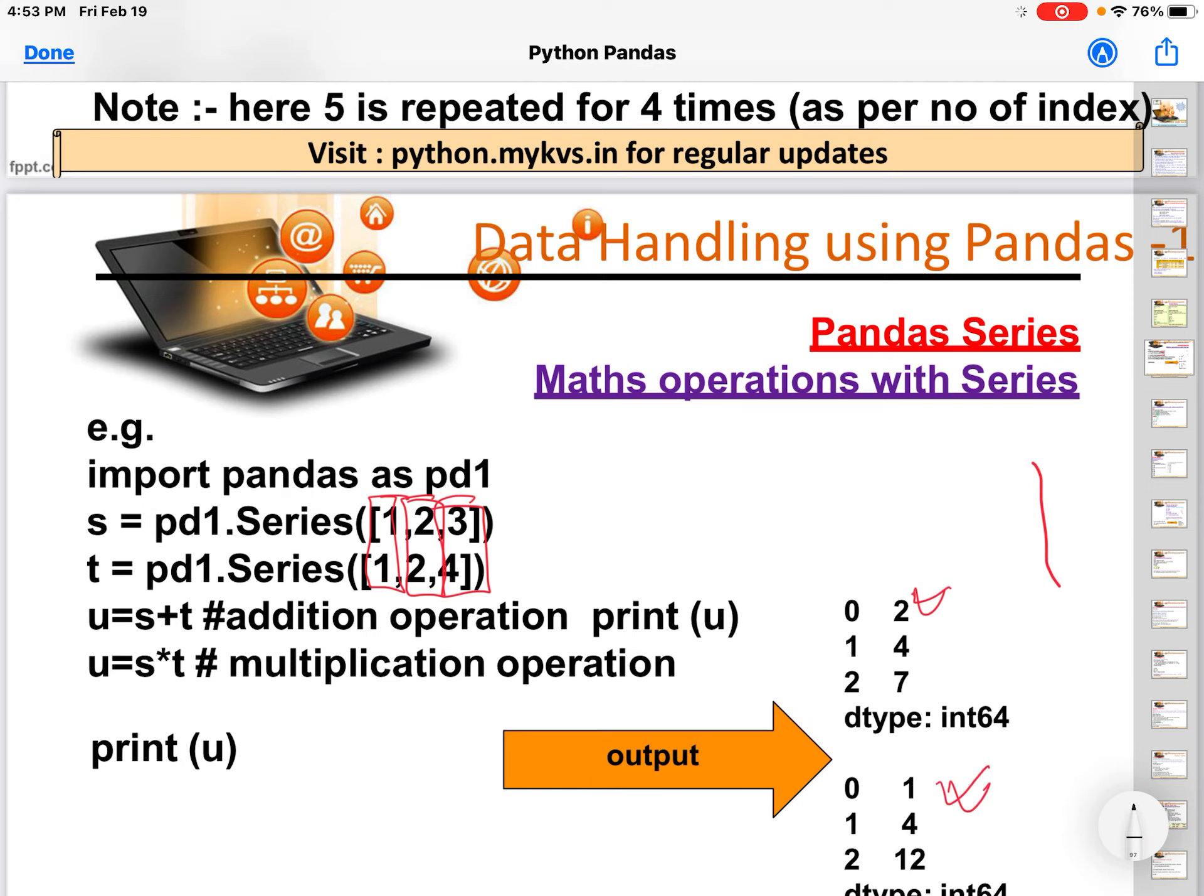So first we are adding both the series s and t, that is the individual elements of s and t. And the second one, we are multiplying.